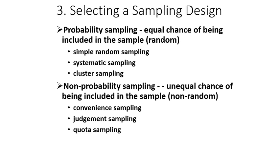Within probability sampling we will discuss three main techniques: simple random sampling, systematic sampling, and cluster sampling. The remaining part on probability sampling will be covered in the next lecture.